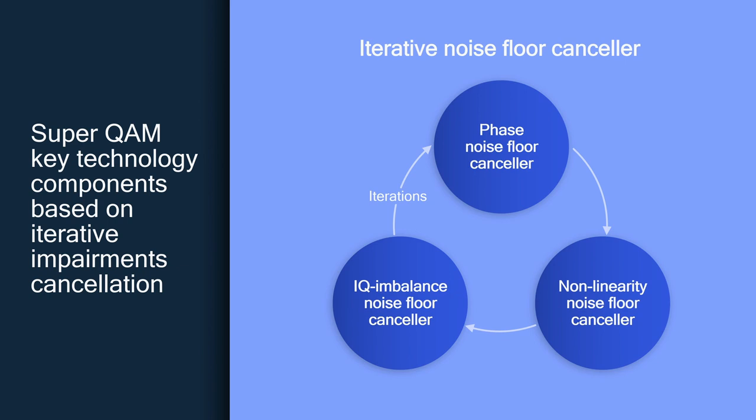To use this technique, we do need some modification to the physical layer, so this is a candidate for future 3GPP releases. Importantly, there are no changes to the phase noise and linearity requirements, which means that you can use the same RF components in base stations or mobile devices.